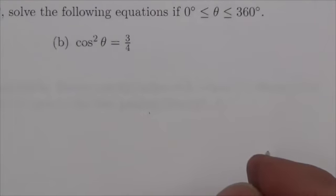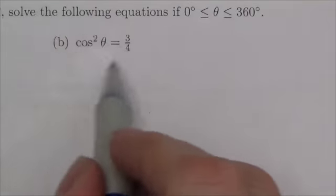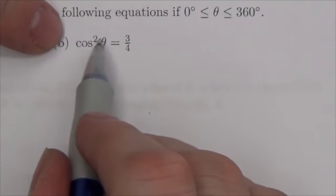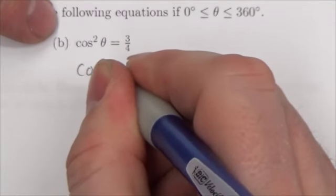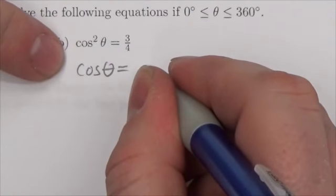Hi everybody, this is the math 20-1 trigonometry review. This is question 23b. In order to answer this problem, it's got a square in it. What I got to do is take the square root of both sides, and what that's going to get me right away is cosine of theta will equal